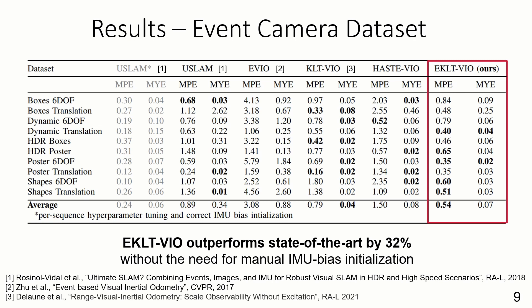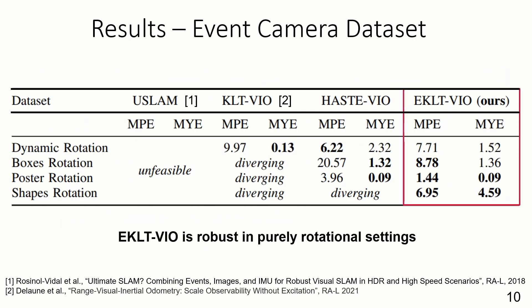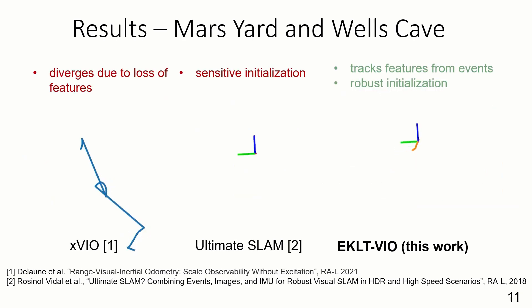We even outperform Ultimate SLAM, which uses a highly accurate optimization-based backend. However, it is highly sensitive to initial bias parameter tuning, which is infeasible on Mars. EKL-TVIO, by contrast, does not require IMU bias tuning. EKL-TVIO also tracks robustly in purely rotational sequences, where other methods either fail to initialize due to small baselines or drift due to motion-blurred frames. In Mars-like environments, like in the Wells Cave, our algorithm can withstand small baselines and low-light conditions, where other algorithms diverge or fail to initialize.